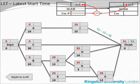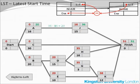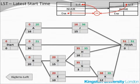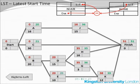51 minus 15 equals 36 — the latest start time for activity J. Then 36 minus the duration of activity A (16) equals 20, the LST for activity A. Similarly, 51 minus 30 (the duration of activity C) equals 21. 51 minus 16 equals 35 for activity H. 51 minus 12 equals 39 for activity K. 39 minus 3 equals 36 for activity G. And 39 minus 10 equals 29 — the latest start time for activity E.